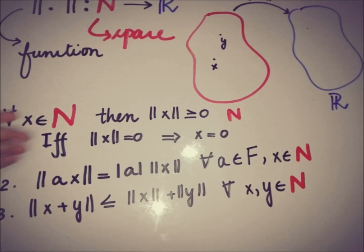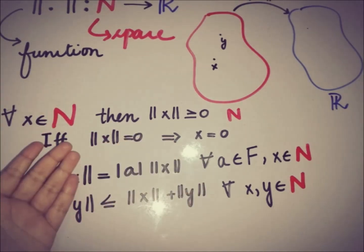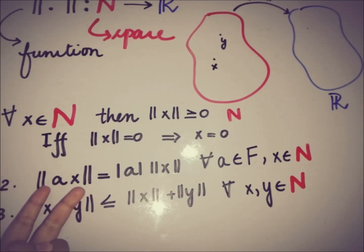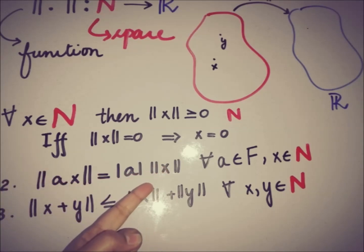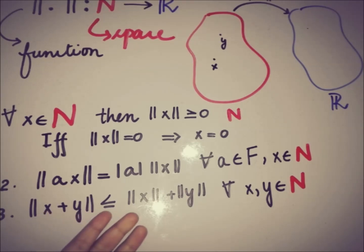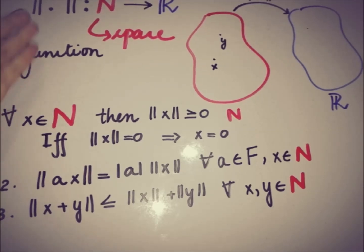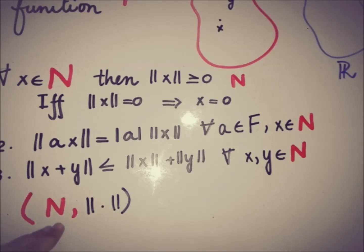So the three axioms that must be satisfied for a normed space are: first, the norm must be greater than or equal to 0, and if the norm is 0 then the element is 0 and vice versa; second, the norm of a scalar multiplication a·x equals the magnitude of the scalar times the norm of x, where a is a member of the field; and third, the triangle inequality — the norm of the sum of two elements must be less than or equal to the sum of their individual norms. If this norm function satisfies these three properties, then the pair of the space and the norm is called a normed space, or normed linear space.